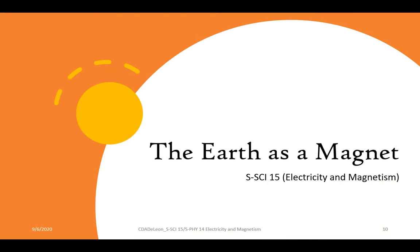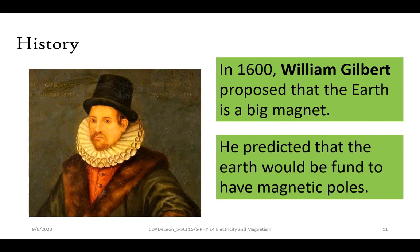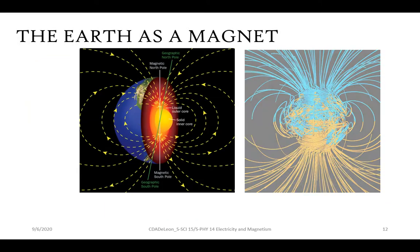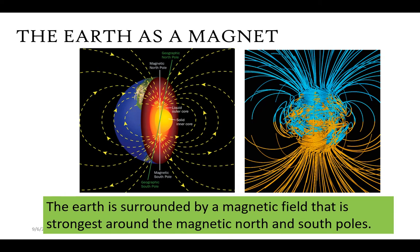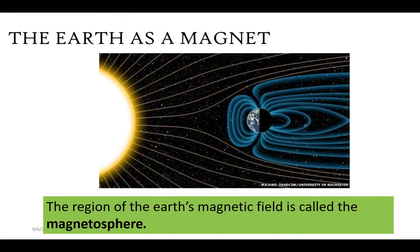Now let's discuss the Earth as a magnet. In the 1600s, William Gilbert proposed that Earth is a big magnet and predicted that the Earth would have magnetic poles. The Earth is surrounded by a magnetic field that is strongest around the magnetic north and south poles. The region of the Earth's magnetic field is called the magnetosphere.